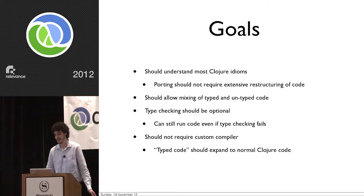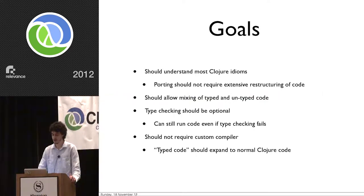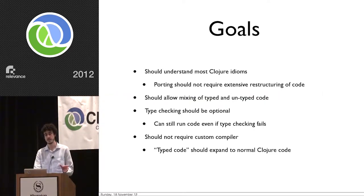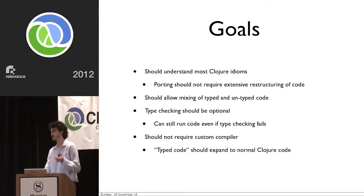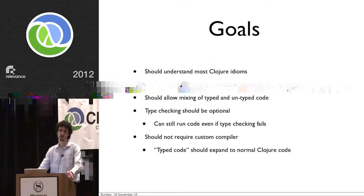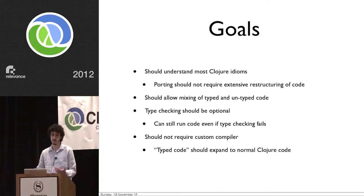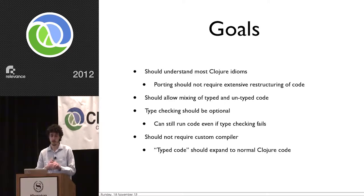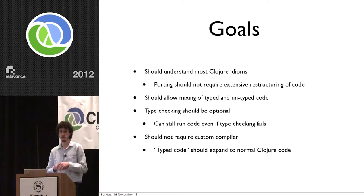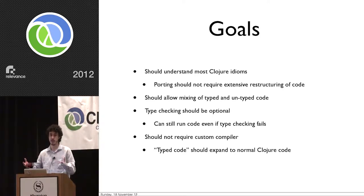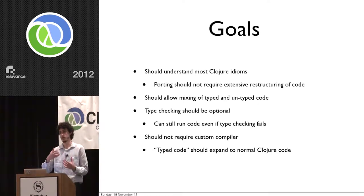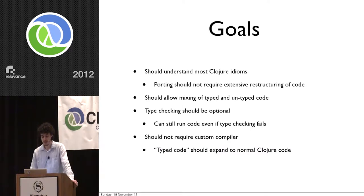If I was going to build a type system for Closure, what would it be like? The goals for Type Closure were: it should understand most Closure idioms, meaning to port untyped code to be typed, we don't want to change its structure or rewrite it — we just add type annotations and that'll be sufficient. We also want to take advantage of existing Closure code and allow mixing between typed and untyped code. Type checking must also be optional, which goes back to combining different testing techniques — if type checking fails, we might want to boot up a REPL or use design by contract.